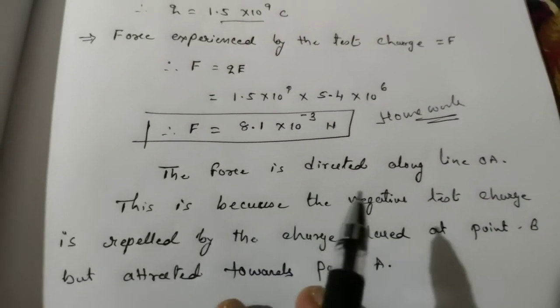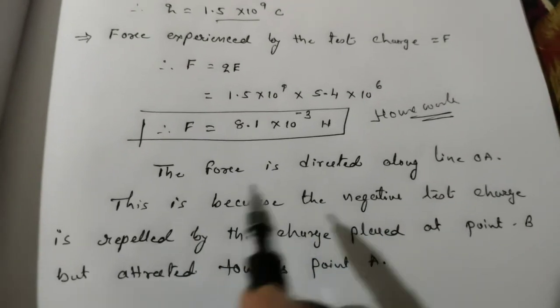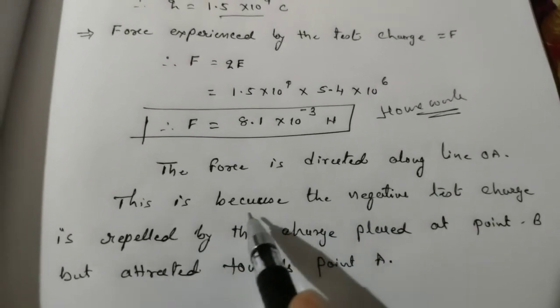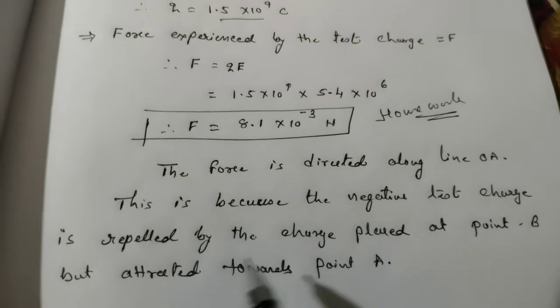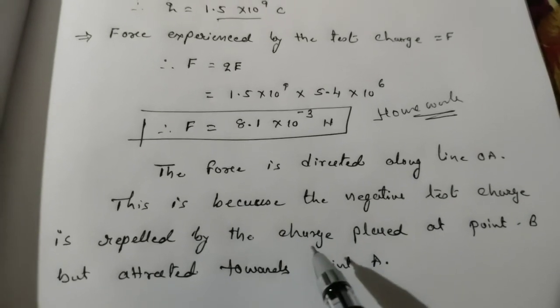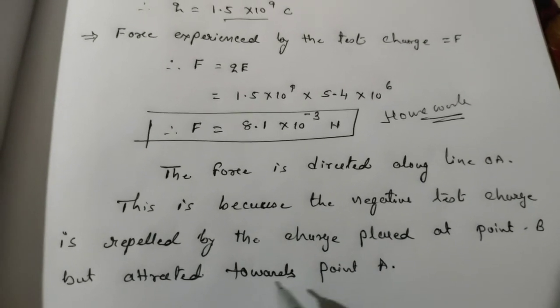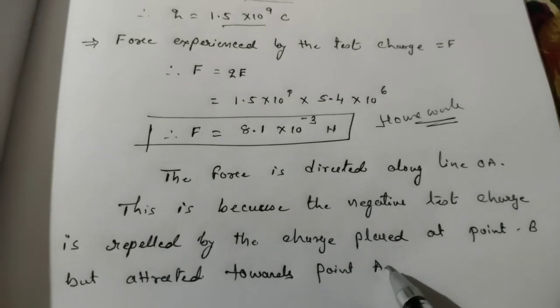This is because the negative test charge is repelled by the charge placed at point B but attracted towards point A.